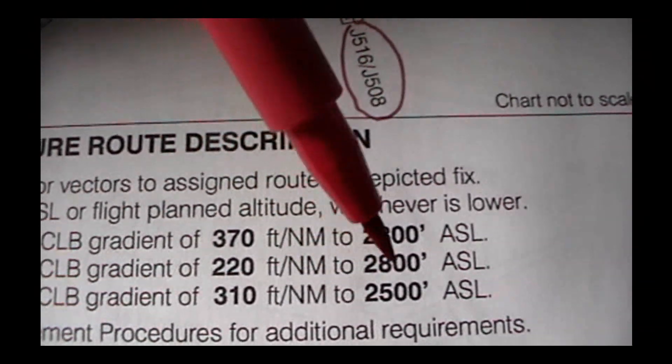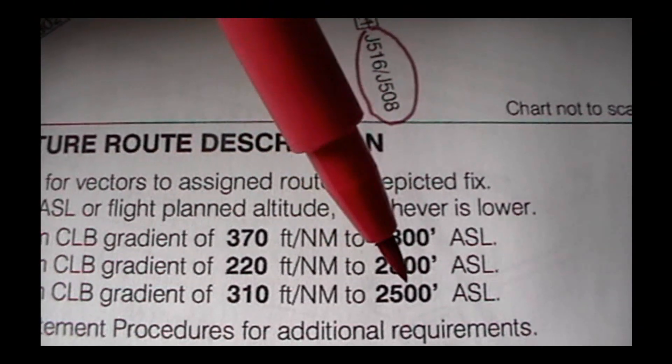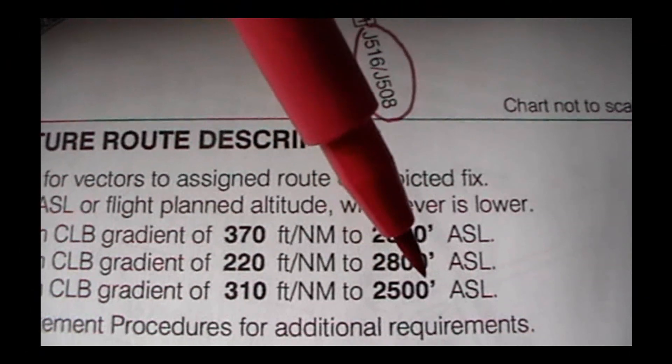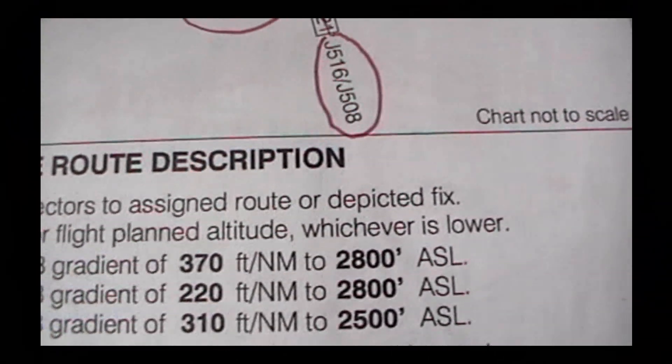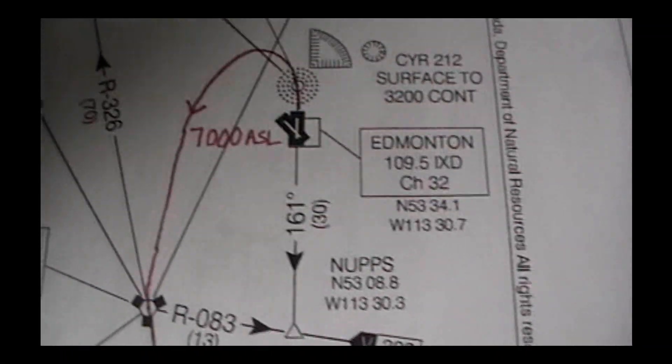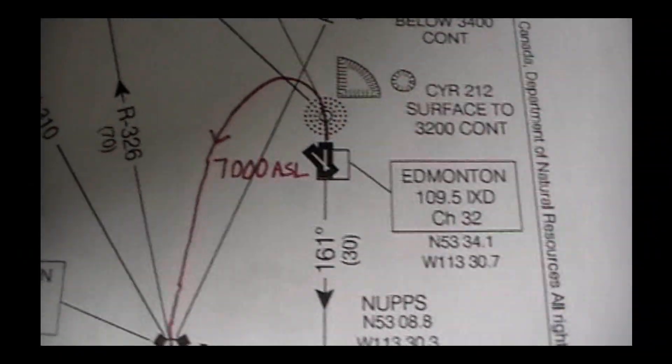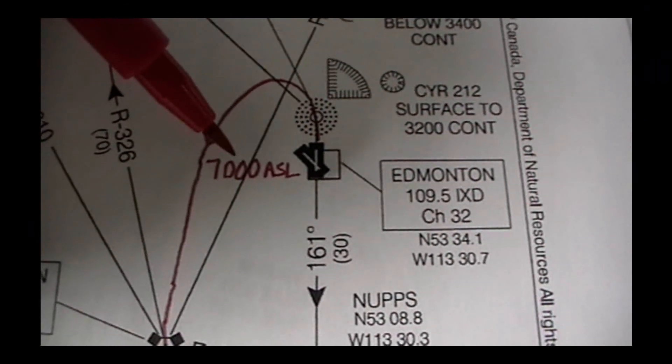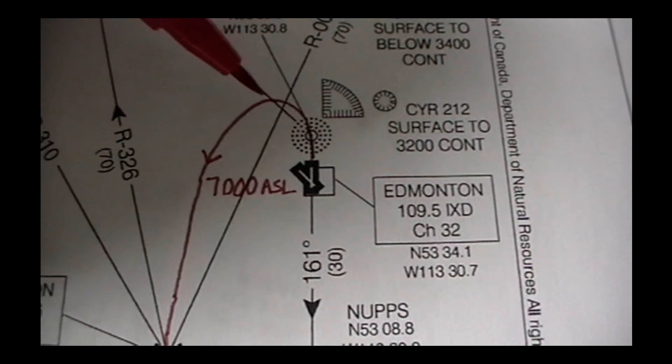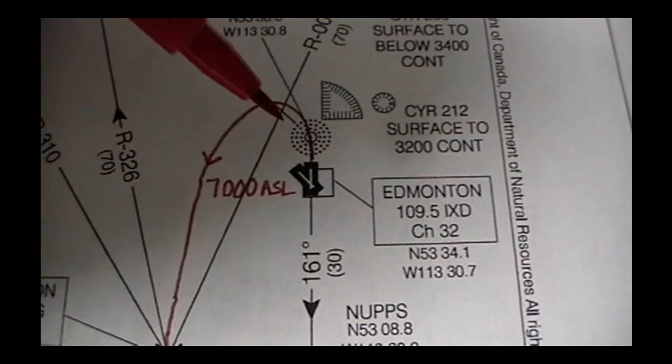So if you were going to be climbing, looking at your instruments, which are measured in mean sea level, you would be above 4,000 feet basically. I'm not going to do the adding right now. So this chart asks us to climb to 7,000 feet ASL once we leave the runway.